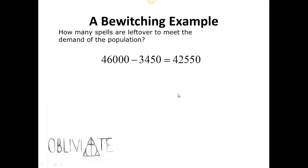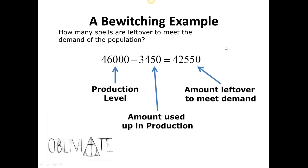For the second question — how many spales are left over to meet demand — we just subtract. We have a production level of 46,000 minus the 3,450 used up in production, leaving 42,550. That represents how much is left over for the population. So: production level minus the amount used up in production equals the amount left over to meet demand.